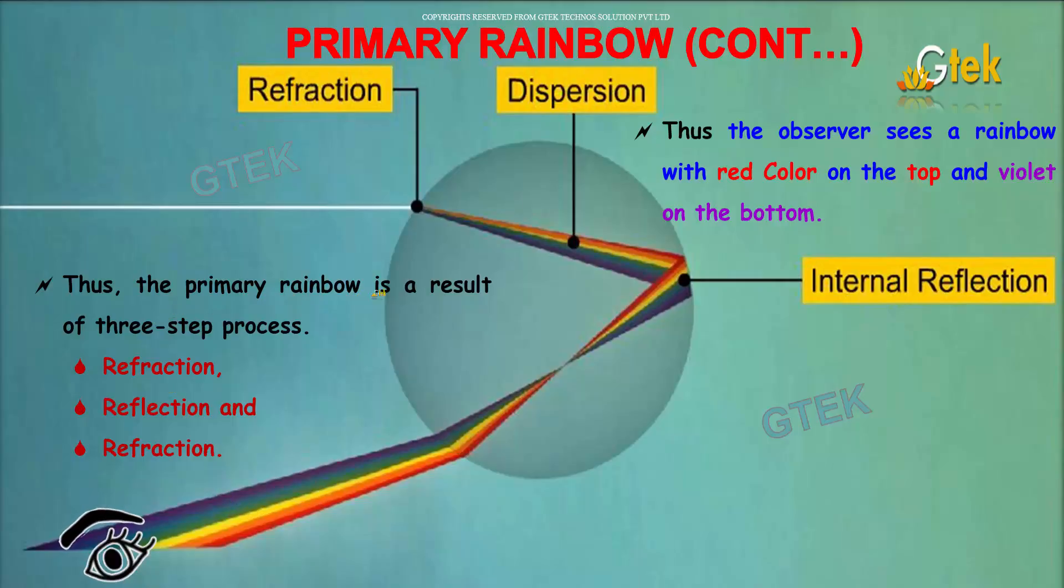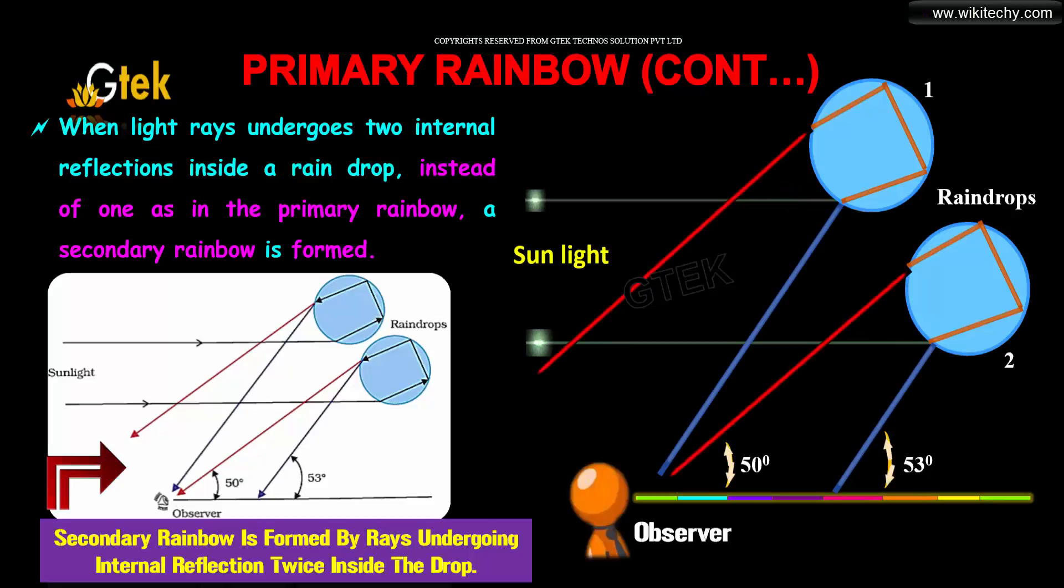Thus, the primary rainbow is a result of three steps: refraction, reflection, and refraction again. So we are looking at the primary rainbow.